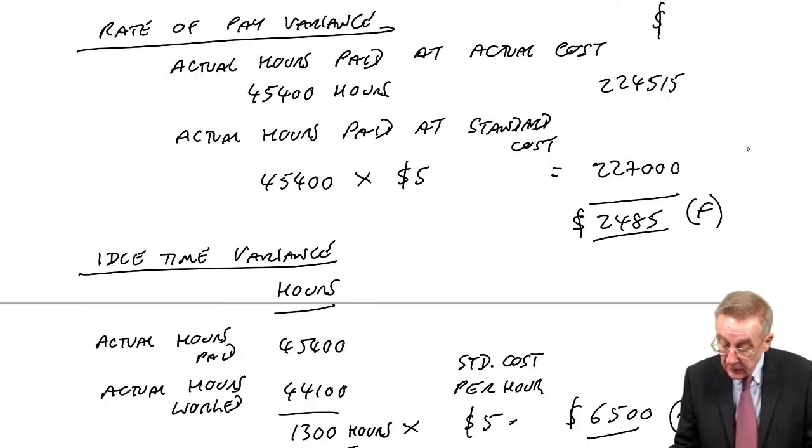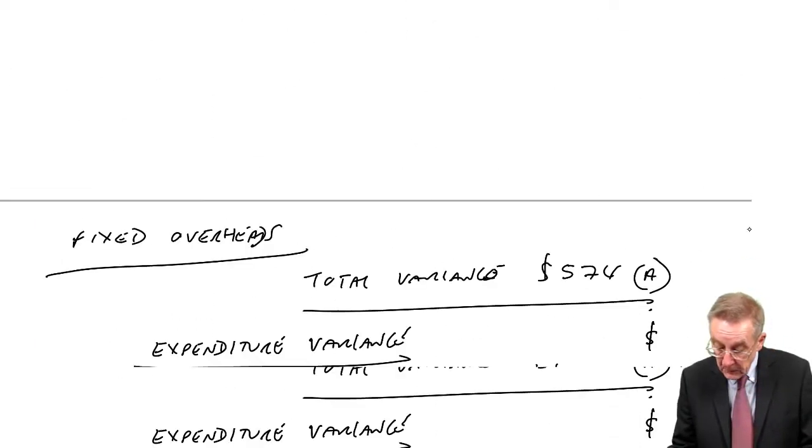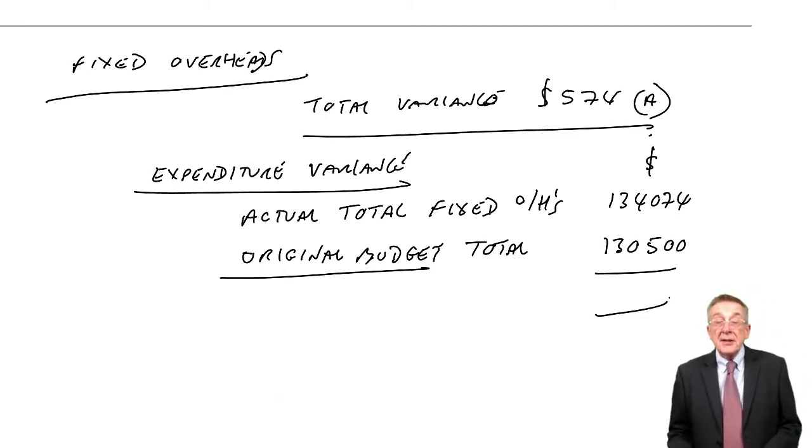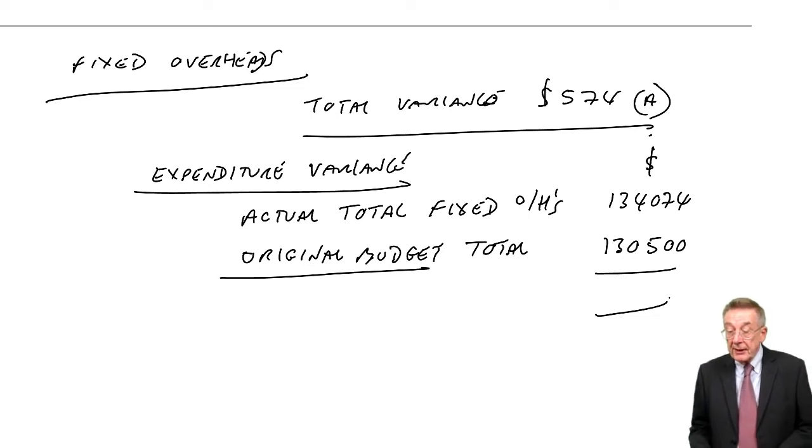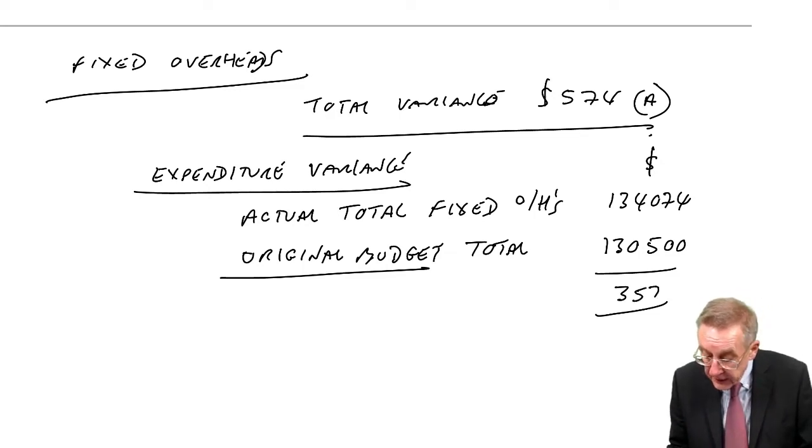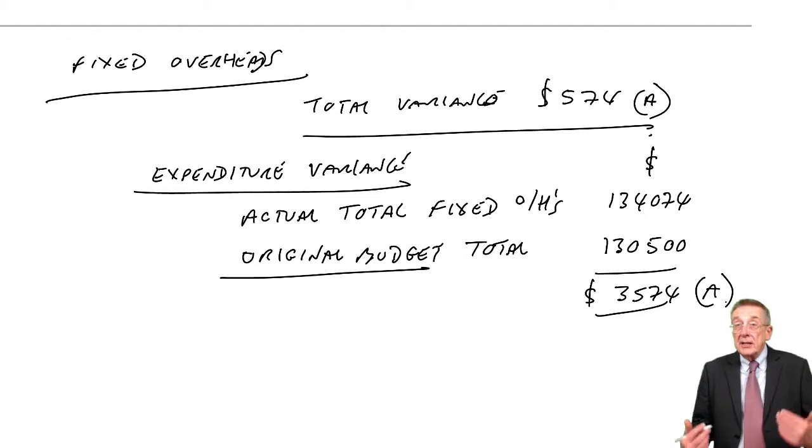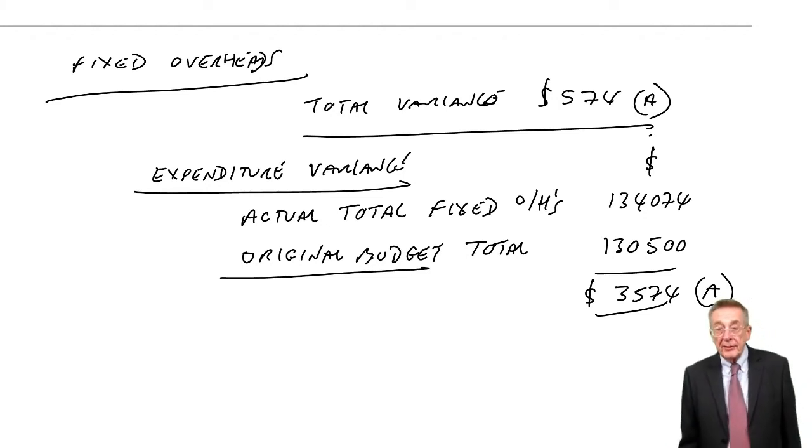If you look back, the original budget, we'd budgeted on spending $130,500. I'm sorry about this up and down, but I've not much choice here. Whatever else happened, we should have spent $130,500. We've actually spent $134,074. Something's gone wrong. We've overspent the difference at $3,574. We've overspent. That on its own would reduce the profit.